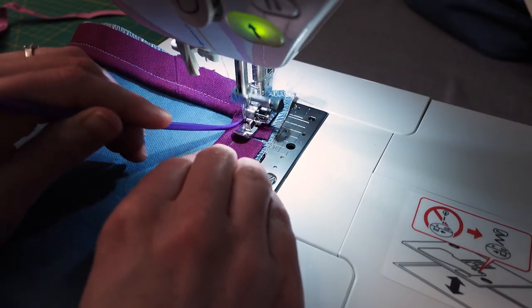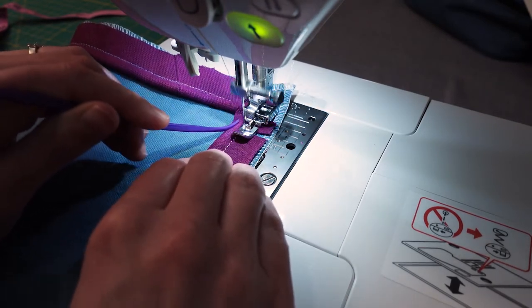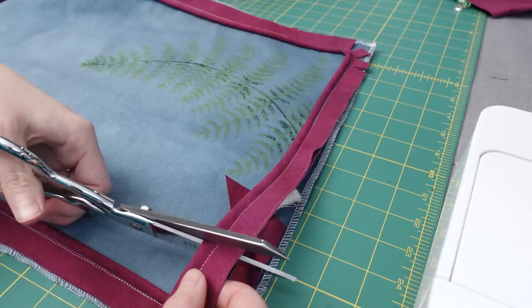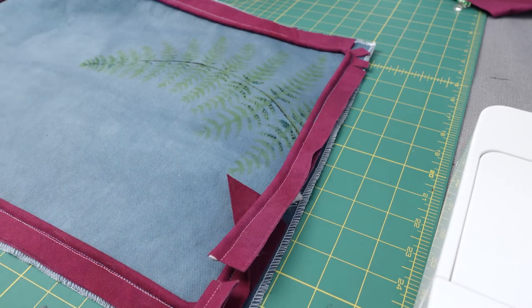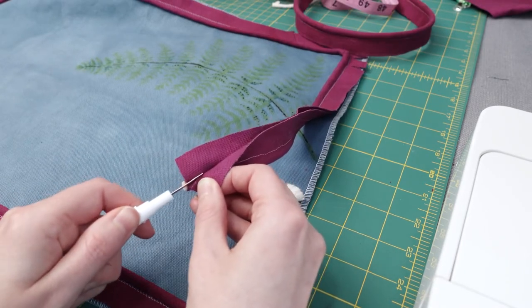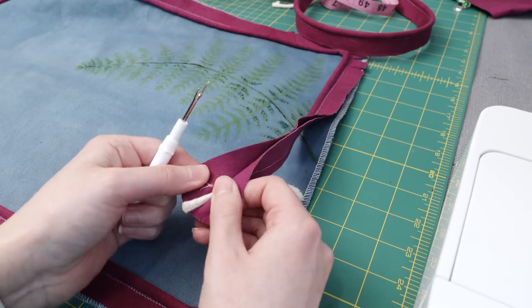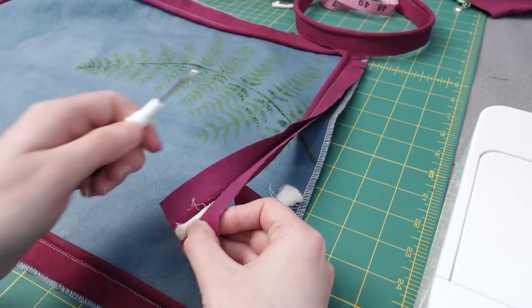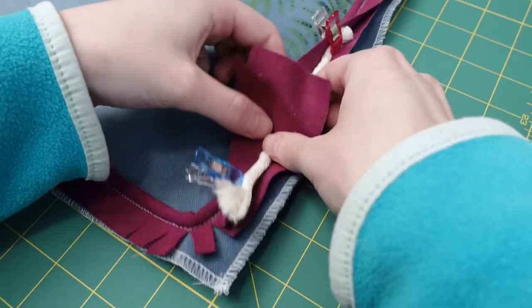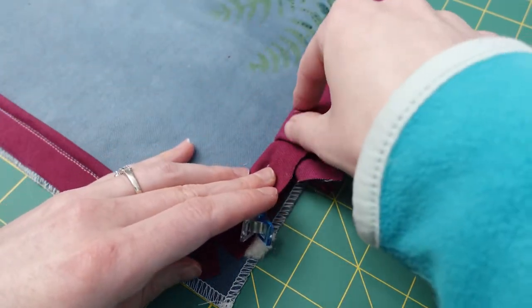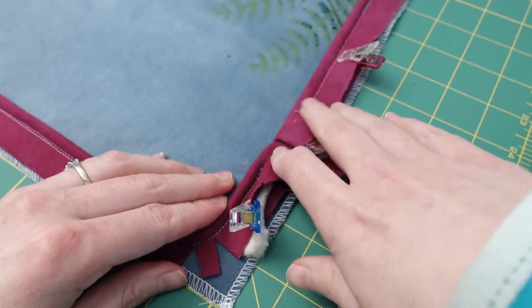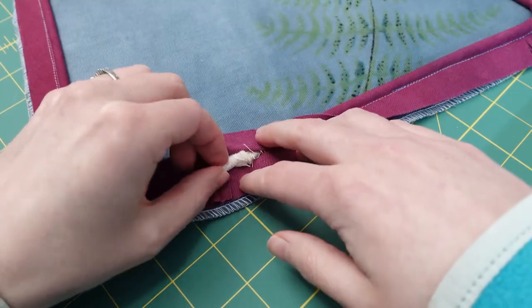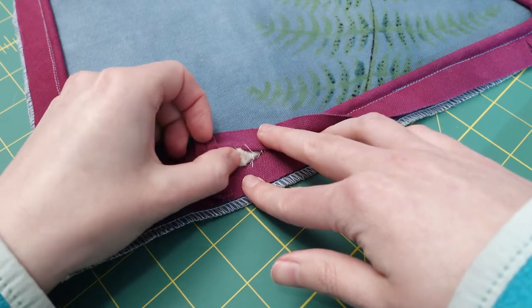To join the ends of the piping, cut the piping so you have at least an inch of overlap and undo the stitching that is holding the piping in place. Join right sides together and sew the ends together. I didn't do this join at an angle because it was too fiddly, but if you can sew the ends at an angle you'll have less bulk. Once that's done, you can sew the piping to the pillow as you did everywhere else.